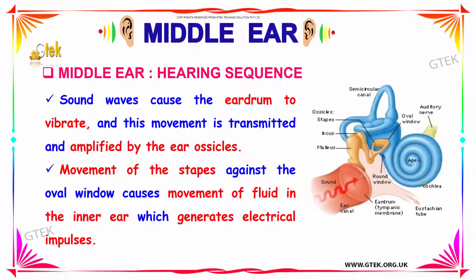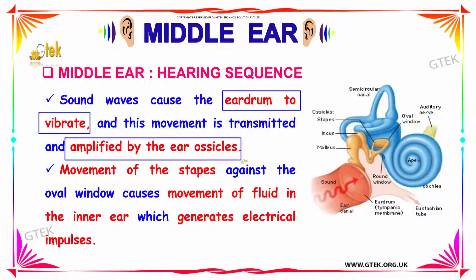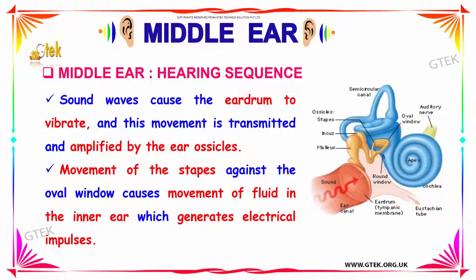The middle ear causes the eardrum to vibrate on occurrence of sound, and this movement is transmitted and amplified by the ear ossicles. The movement of the stapes against your oval window causes movement of the fluid in the inner ear. As the fluid moves in your inner ear, an electrical impulse is generated which transmits the sound to your brain. This is how the middle ear works in the hearing sequence.